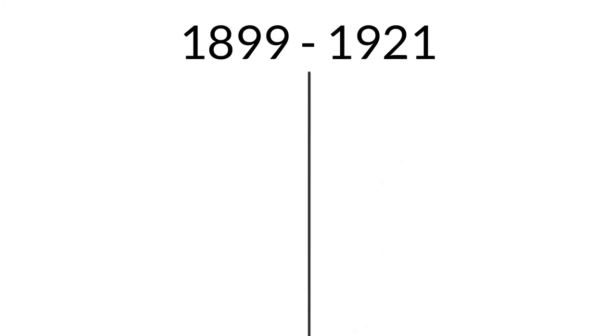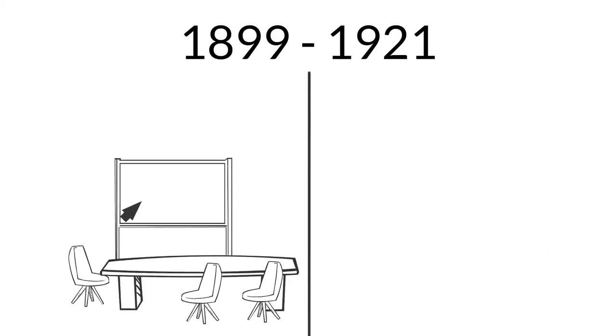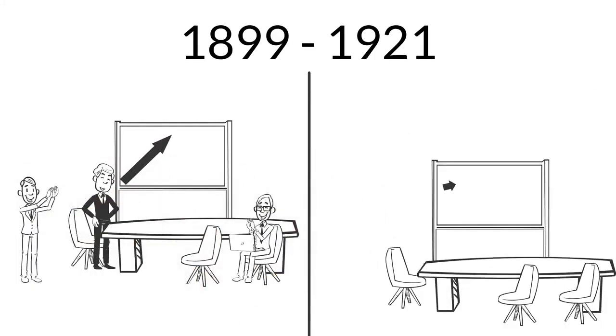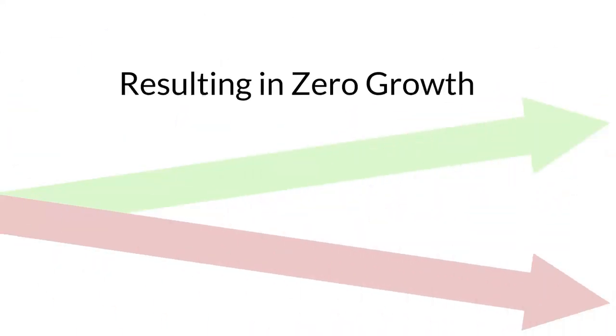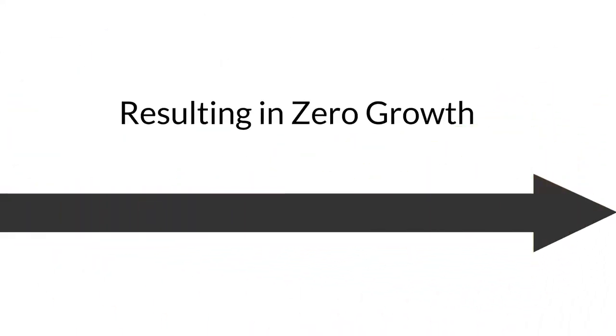You would see that during this period, there were many good years and many bad years, but the good years and bad years all ended up washing each other out. Ultimately, after that 21-year period, the stock market experienced zero growth.